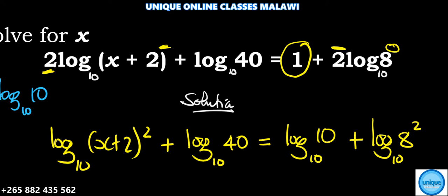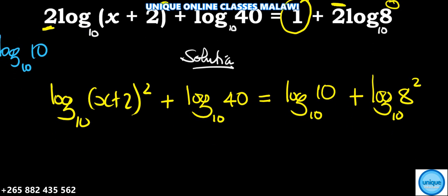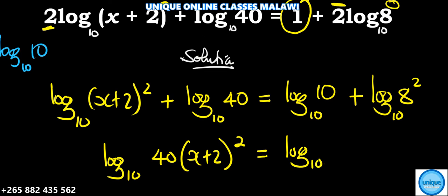Next we apply laws of logarithms. When you are adding the logs, it's the same as multiplying them. So here it will be log base 10 of 40 times (x+2)² is equal to log of 10 times 8². So 8² is 64, so we are putting 640 there.